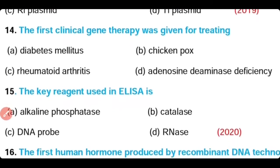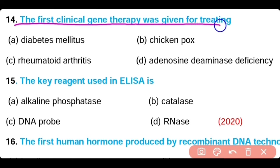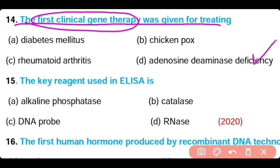Question 14: The first clinical gene therapy was given for treating — diabetes mellitus, chickenpox, rheumatoid arthritis, or adenosine deaminase deficiency? The correct answer is option D. The first clinical gene therapy took place in 1990 in the USA. It was given for treating adenosine deaminase deficiency in a 4-year-old child, Ashanthi de Silva.